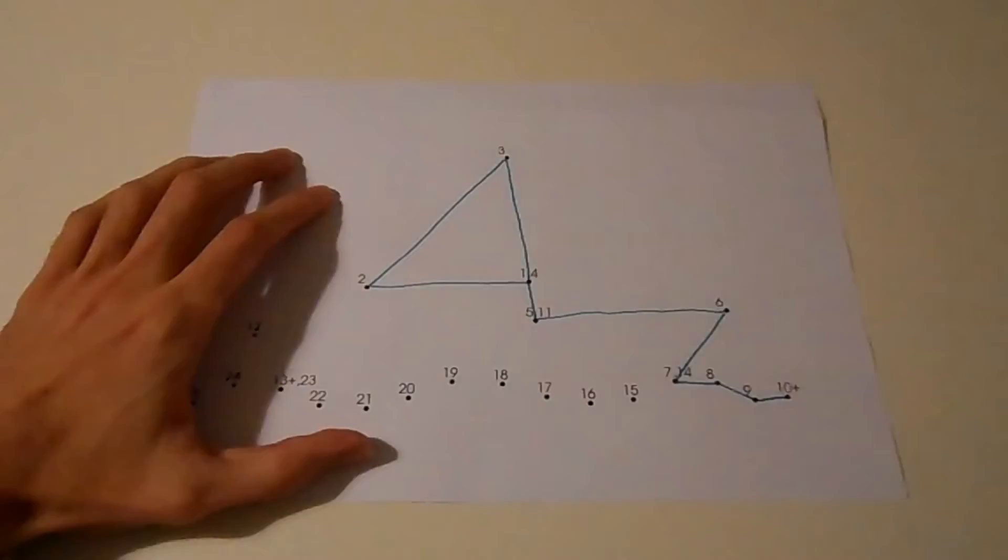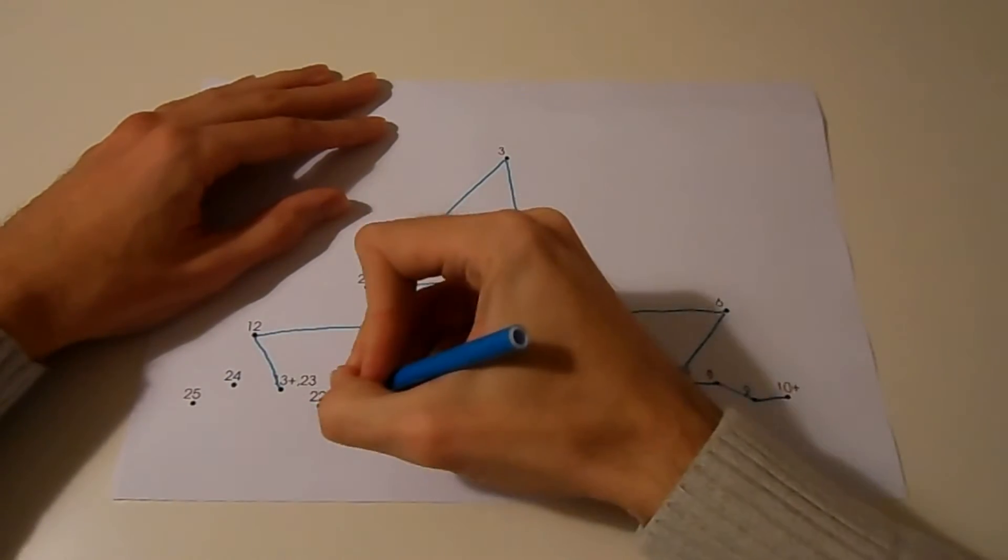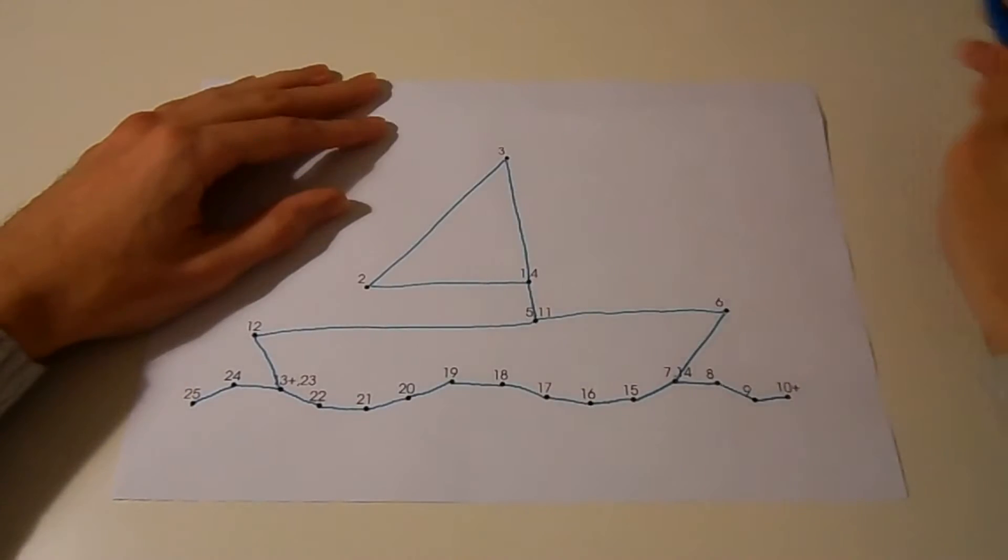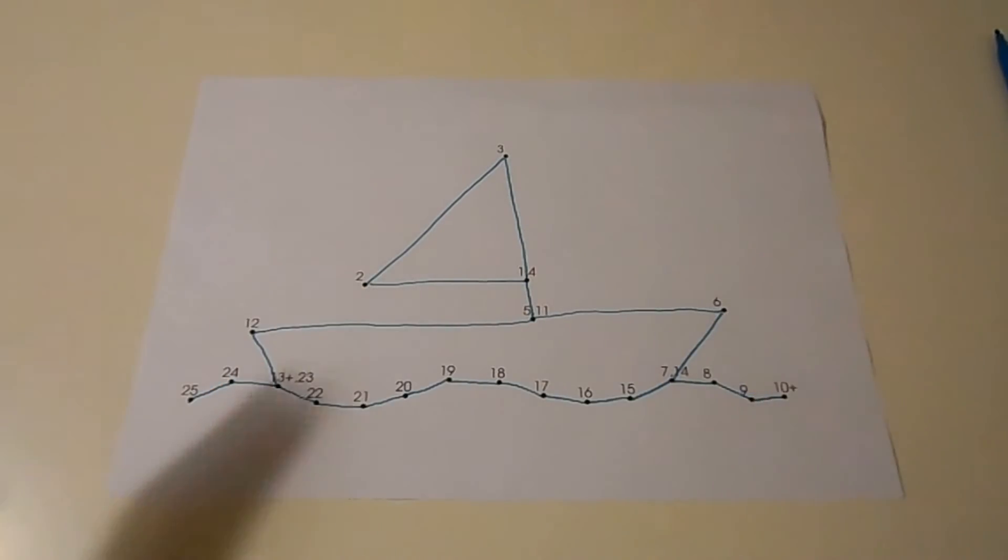One of the problems with connect the dots puzzles, or at least undesirable aspects from an aesthetical point of view, is the fact that there are these numbers in the puzzle. Of course they are necessary to know how to connect the dots, but once you connected the dots, the numbers are still there and they make your picture ugly.